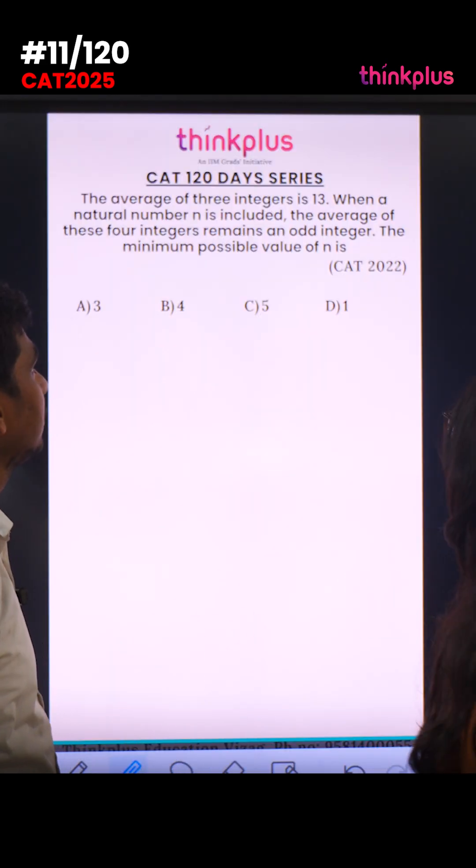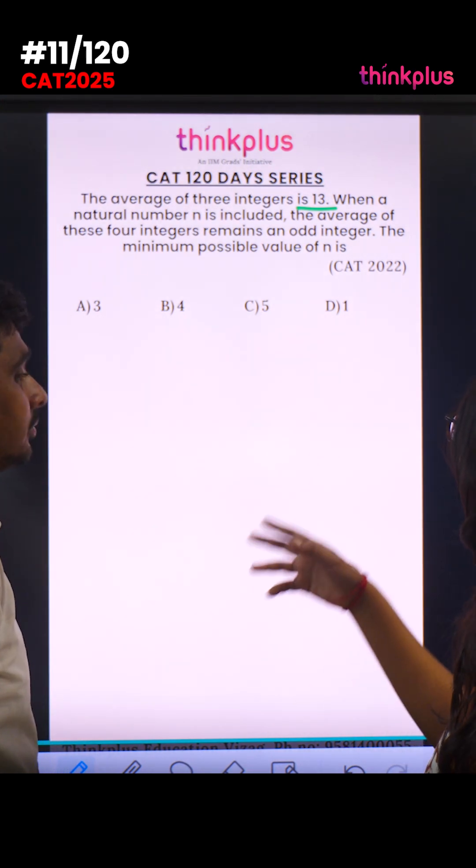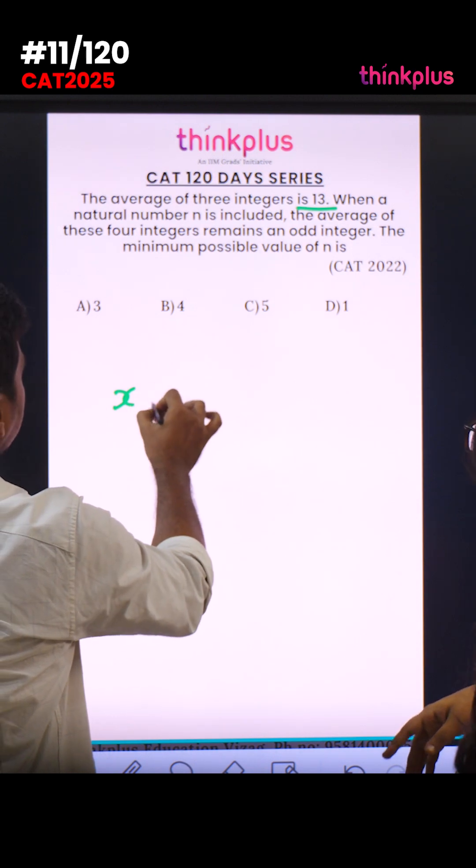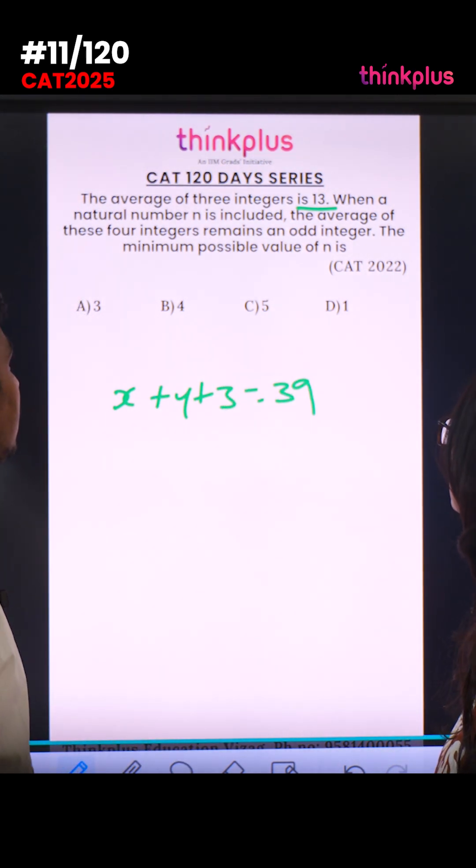The average of three integers is 13. So the sum of three integers equals 39. You are taking x plus y plus z equals 39.